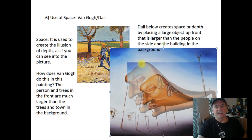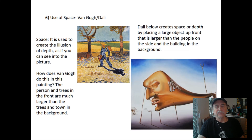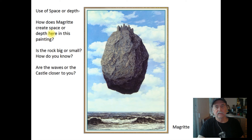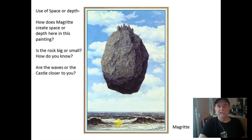Another example is the artist Magritte — an interesting piece with a large, huge rock floating above the ocean; a definite sense of unreality with real elements mixed in. The waves look closer to us, while this rock appears to be floating out over the water. Way up at the top there is a castle, and he's done a very good job creating the illusion of a floating rock with a castle on top — a real sense of space.